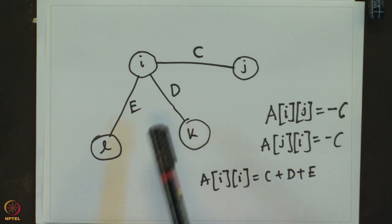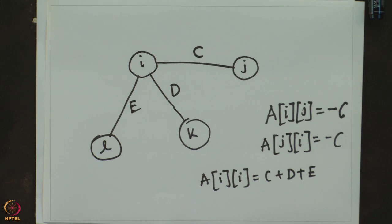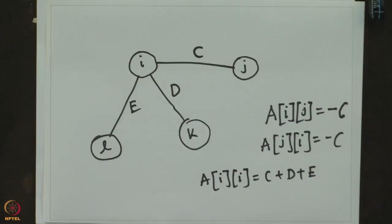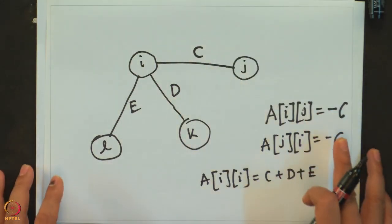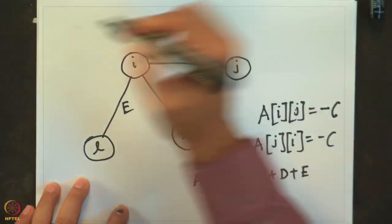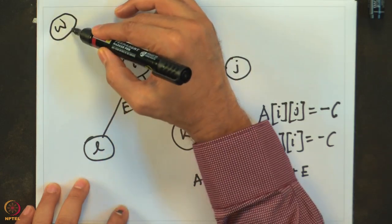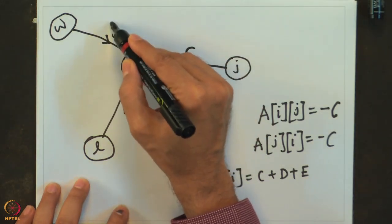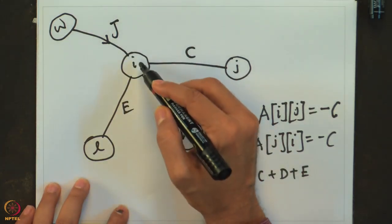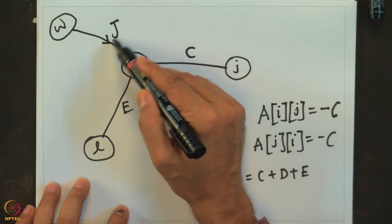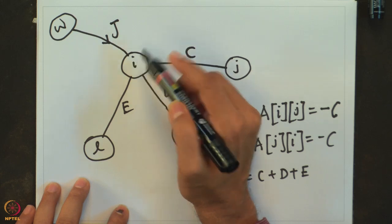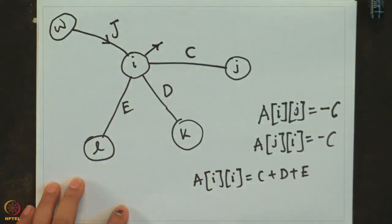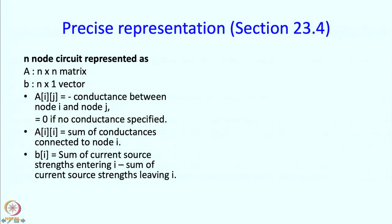We have not yet said how current sources are represented, but we also have vector B. If you have a current source that starts at some vertex w and enters node i with strength j, then B[i] should be the sum of all such current values forced to enter. If there are currents leaving, that is a negative entry — we subtract the sum of the strength leaving i.